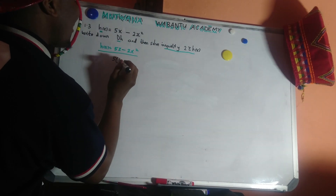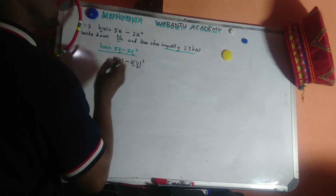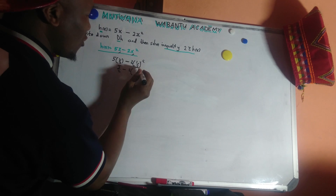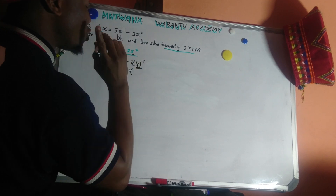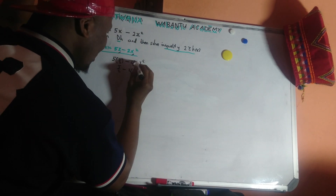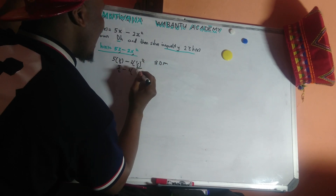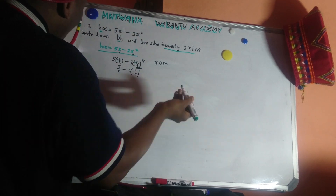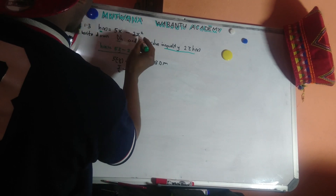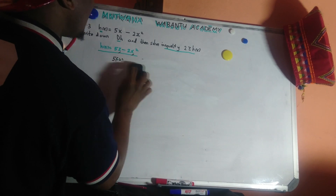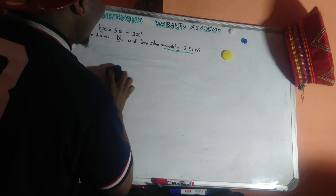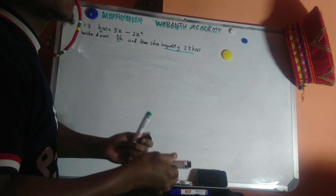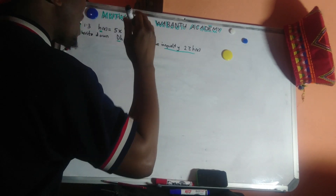Any number is going to work here. Try any number — positive, negative, or fraction. For example, let's say x equals one half: 5 times one half minus 2 times one half squared. You square one half to get one quarter, and you're going to get a value. Even if x is negative, it's still going to give you a result. So any number you plug in here is going to work.